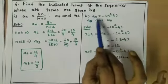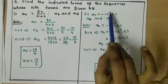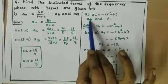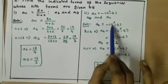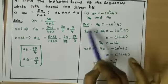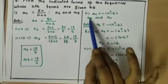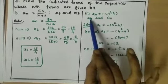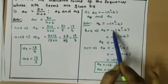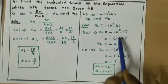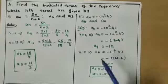The second sum: an = -(n² - 4). Find a4 and a11. For a4, substituting n = 4: a4 = -(4² - 4) = -(16 - 4).